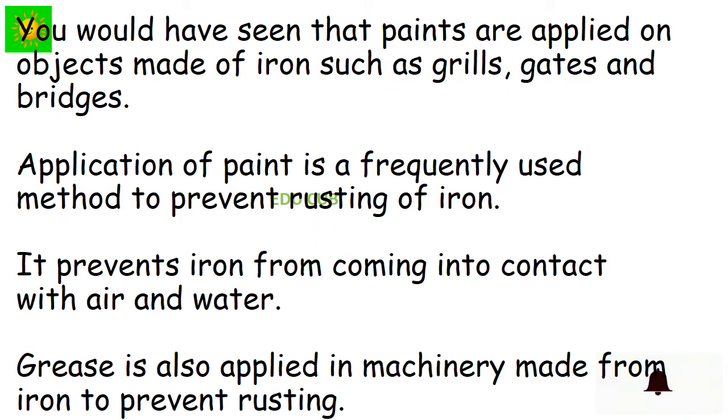You would have seen that paints are applied on objects made of iron such as grills, gates, and bridges. Application of paint is a frequently used method to prevent rusting of iron. It prevents iron from coming into contact with air and water. Grease is also applied in machinery made from iron to prevent rusting.